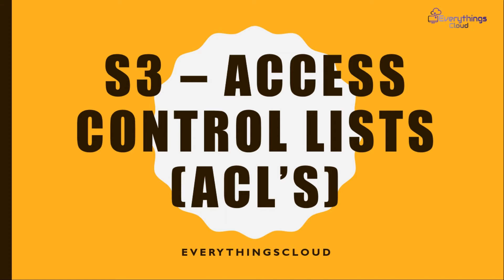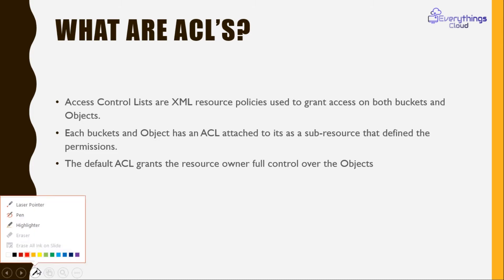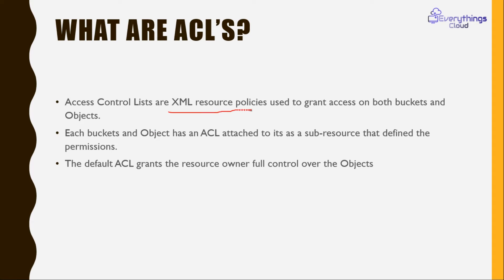If you haven't seen the last video, I request you please go to my previous second or third part of this video series where you can find the basics about ACL. So let's start. ACL is the Access Control List. It is a type of XML resource policy which grants permission to the bucket and the object.